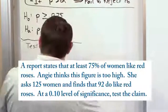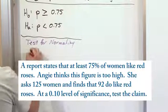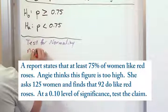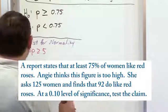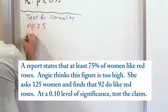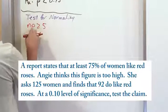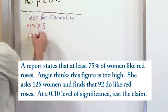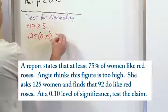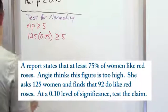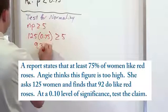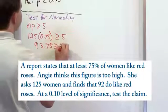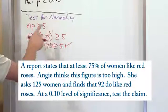The test for normality is n times P greater than or equal to 5. Now in our particular problem it says she asked 125 women, so n is 125 women. P comes from the null hypothesis 0.75 greater than or equal to 5. And when you do this multiplication, 125 times 0.75, you get 93.75 greater than or equal to 5. So we put a check there and say yes, this is true.